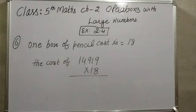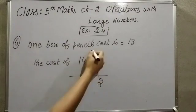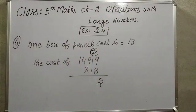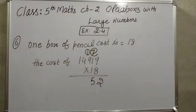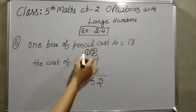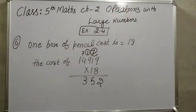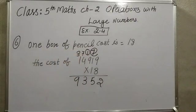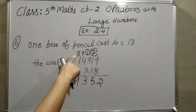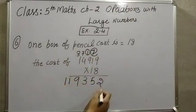Multiplying by 8: 8 × 9 = 72, so 2 here and 7 carry. Then 8 × 1 = 8, plus 7 = 15, so 5 here with 1 carry. Again 8 × 9 = 72, plus 1 carry = 73, so 3 here and 7 carry. Then 8 × 4 = 32, plus 7 = 39, so 9 here with 3 carry. Then 8 × 1 = 8, plus 3 = 11, so 1 here with 1 carry.